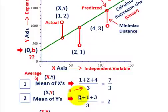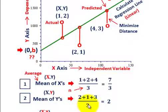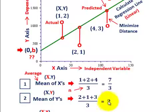Next, the mean of the y's — do the same thing for y's. The first y value was 2, the next is 1, and the third is 3. So that's 2 plus 1 plus 3, giving us 6. Divide by the number of data points, 3, and we get 2. So the average value of our y's, or the mean of the y values, is 2.